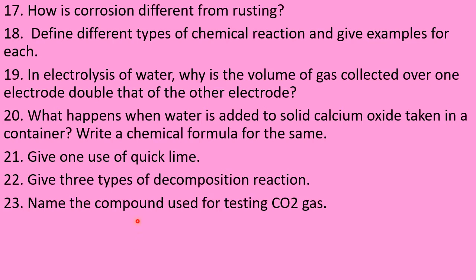Write about corrosion and rusting. Corrosion is a general word applying to all types of metals, whereas rusting is a specific term applying only to iron. Start your answer this way, then give examples and remedies. Also define different types of chemical reactions and give examples for each.